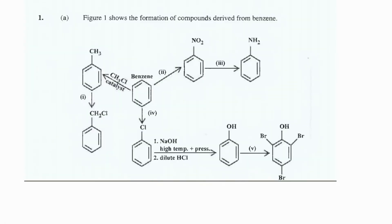In figure one we're shown some derivatives of benzene and asked to provide the reagents used in steps one to five to achieve these derivatives. In step one we're going from methylbenzene to form one chloromethylbenzene. Since we're adding chlorine, the first thing we need is elemental chlorine gas. The second thing we need is energy in the form of UV light.